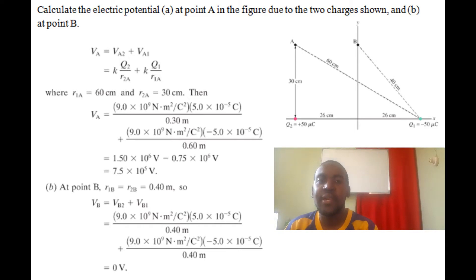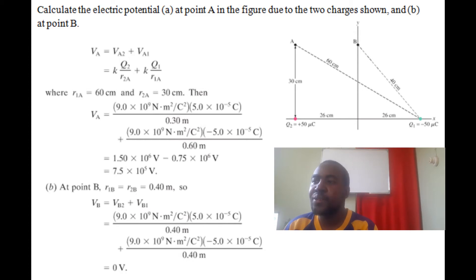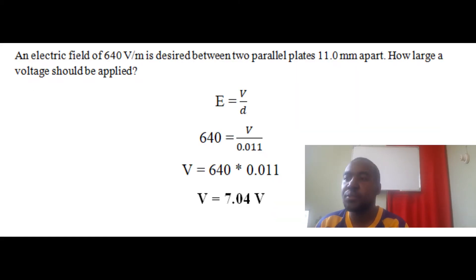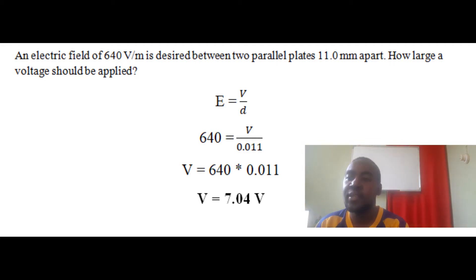So we note that if we have the same charge value but different sign and we're at the midpoint between both charges, we get zero volts. For the next part, we need to create an electric field of 640 V/m. We use E equals V over d, where d is 11 millimeters (0.011 m). Cross-multiplying gives a voltage of 7.04 volts.